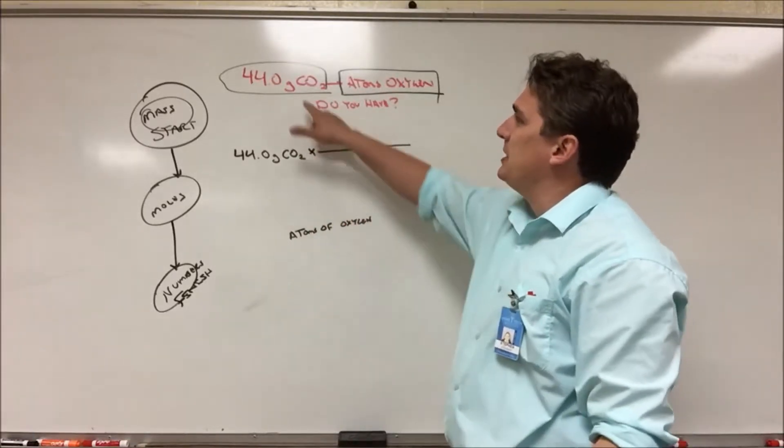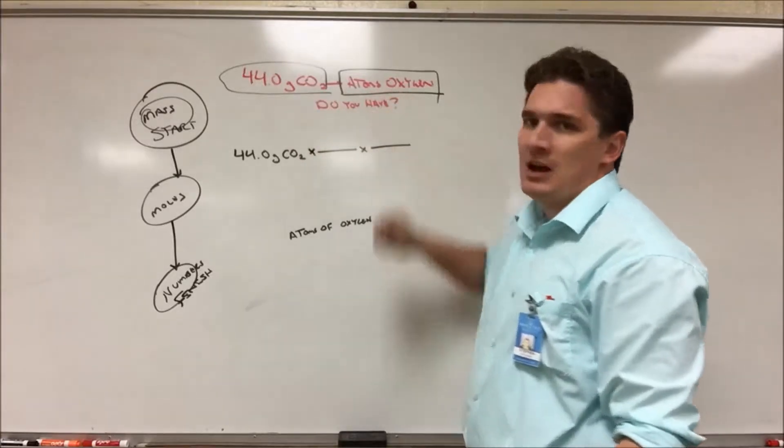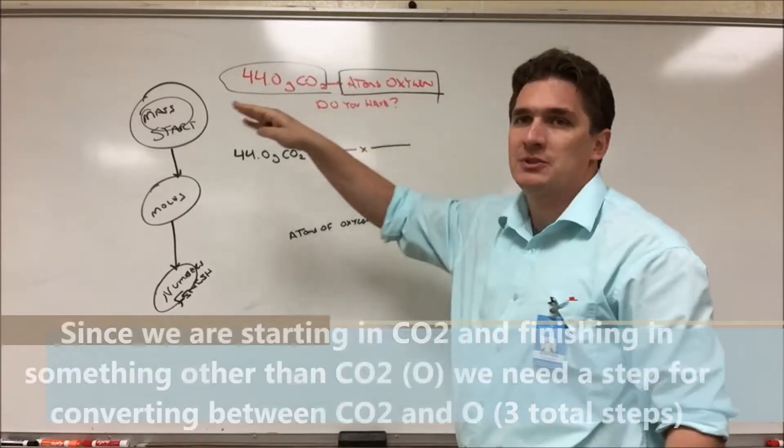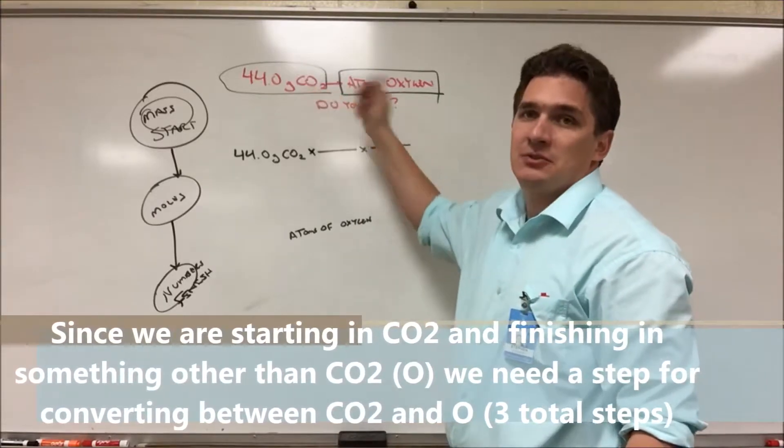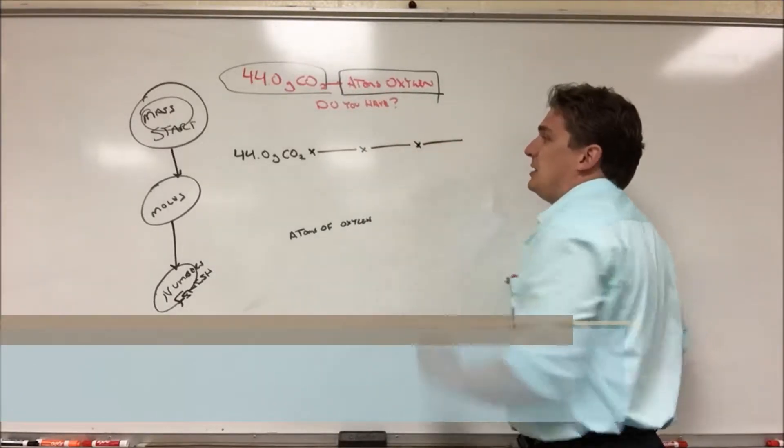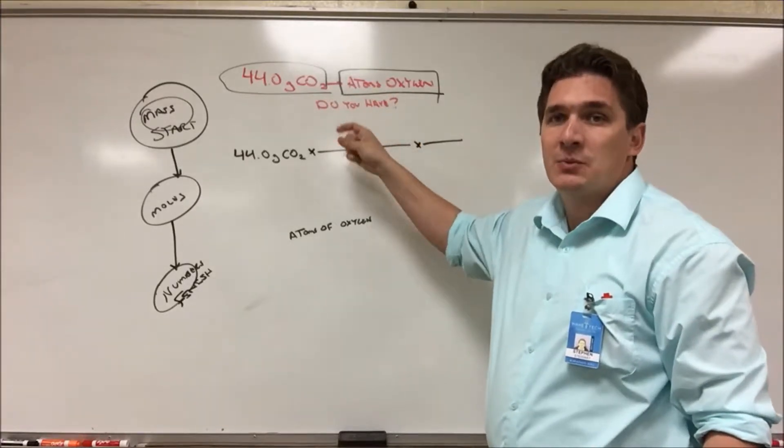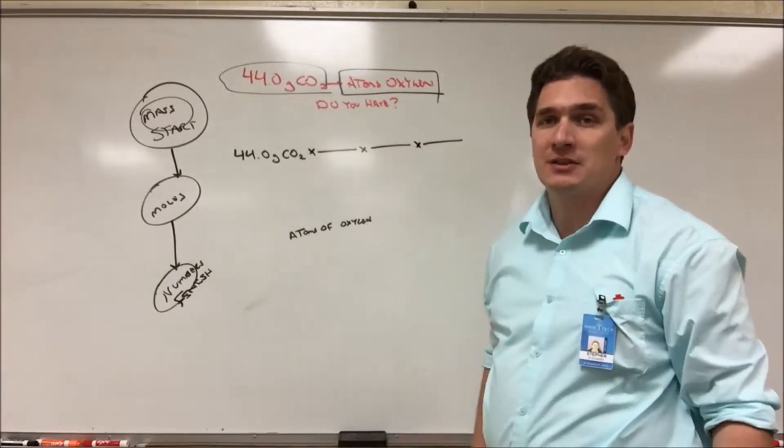Now the other thing is we're starting out with CO2 and we're finishing up with oxygen. We're not finishing with what we're starting with. So we need an additional conversion factor to get us from CO2 to oxygen. So we get into it based off the problem statement alone that we're going to have to have three conversion factors to make this work.